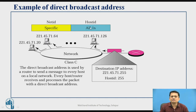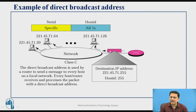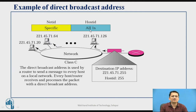There is a type of IP address called the direct broadcast IP address. In this case, all the bits in the host ID part are one. For example, if the destination IP address is 221.45.71.255 — a class C address where 255 means all host ID bits are one — it indicates that the packet is to be forwarded to all hosts within that network. That broadcast packet will never go outside the network; when it reaches the router the router will drop it, so it is broadcast only within the network.